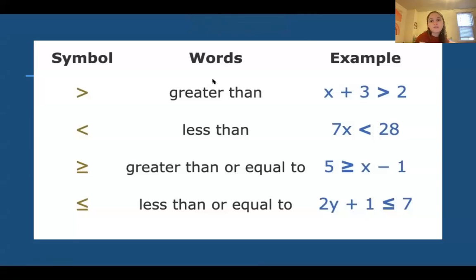So when it comes to inequalities, there's a few symbols we have to know. This first one right here is a greater than symbol. So as you can see here, x plus 3 is greater than 2. That's what that means. This one, the opposite, is less than. So here we can see 7x is less than 28.